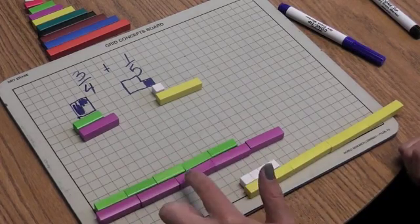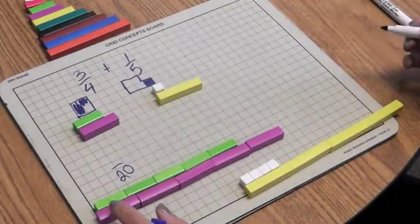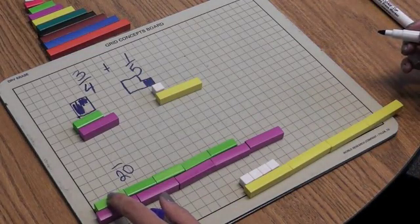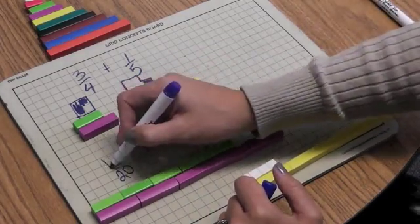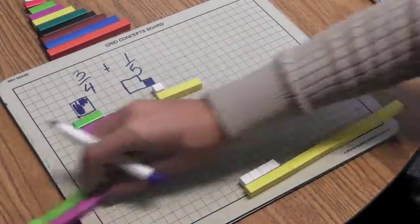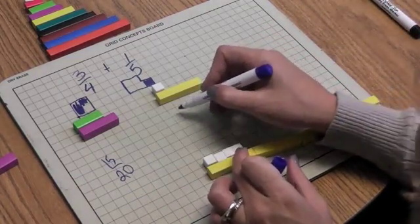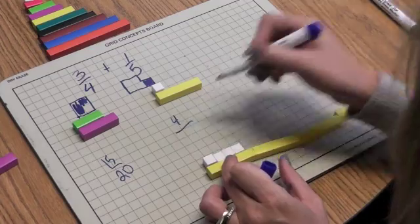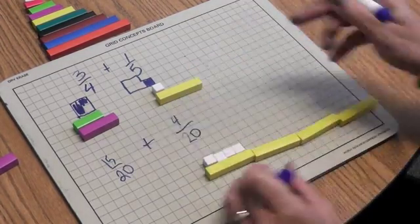My new fraction here, if my denominator is now 20, my new numerator is 3, 6, 9, 12, 15. I'm going to move that out of the way. And my new numerator on this fraction is 4, and I have 20 on the bottom.